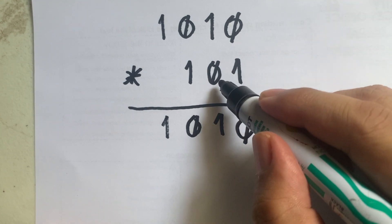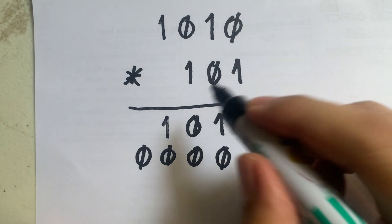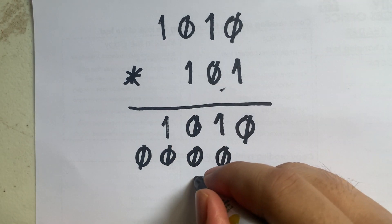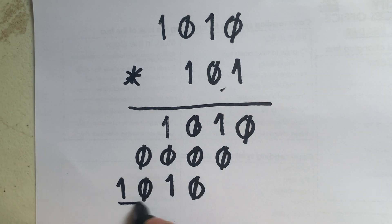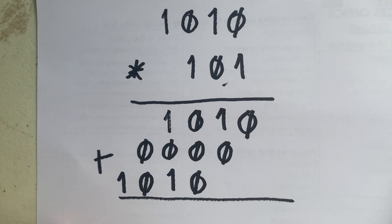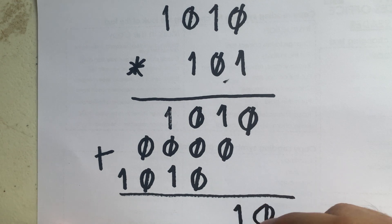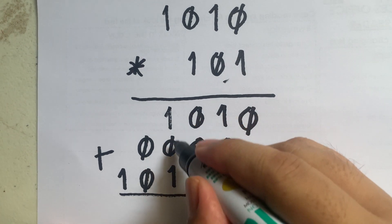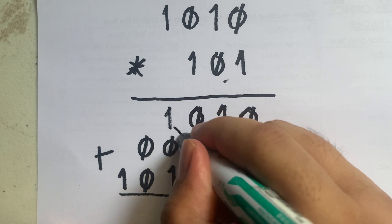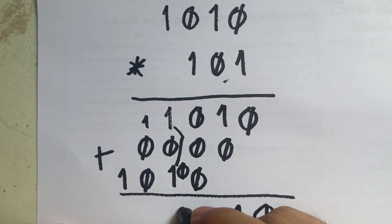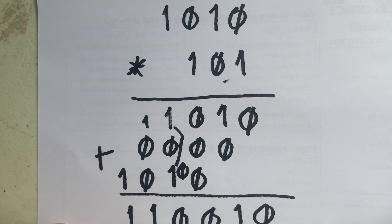We go to the second digit of the multiplier, which is 0, so we write 0000. Then the next digit is 1 again, so we copy the multiplicand which is 1010. Now we add: 0 plus 0 is 0, 1 plus 0 is 1, 0 plus 1 is 1, and we have 1 plus 0 plus 1 which gives 0 carry 1. We bring down 0, then bring down 1, then bring down 1.